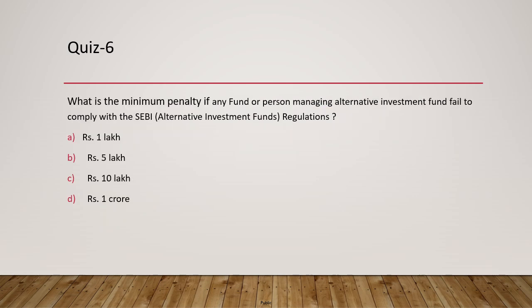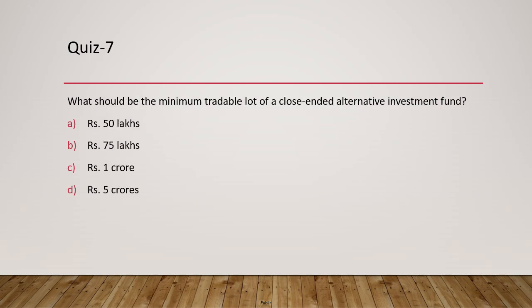Question 6: What is the minimum penalty if any fund or person managing an alternative investment fund fails to comply with SEBI regulations? The penalty is recurring — as days go on, the penalty keeps getting added and can be very high — but the minimum penalty is one lakh rupees. The answer is A.